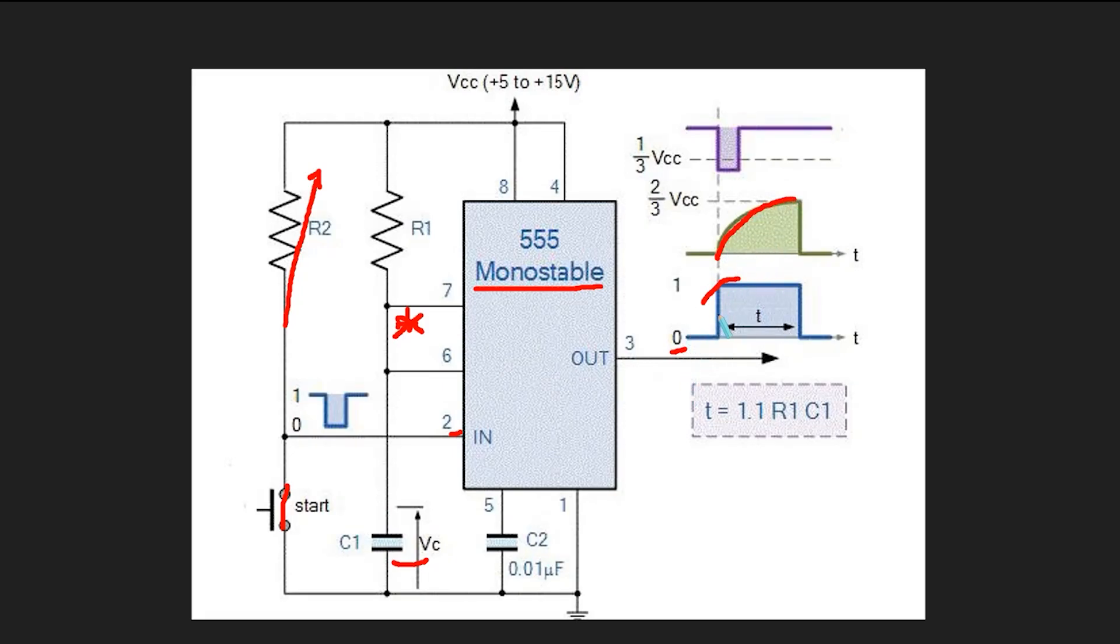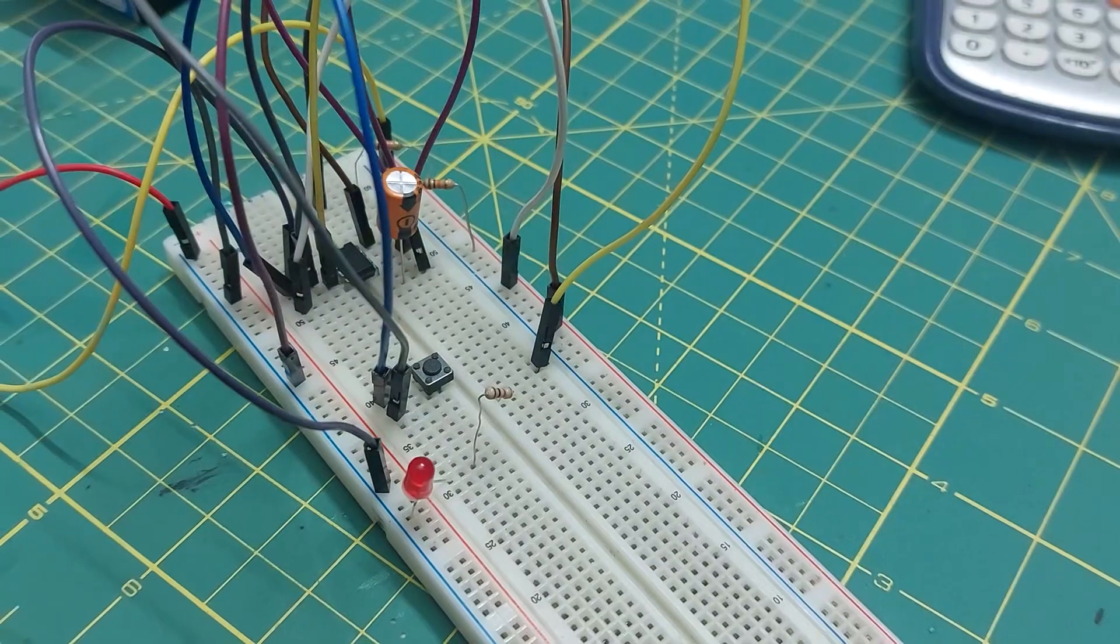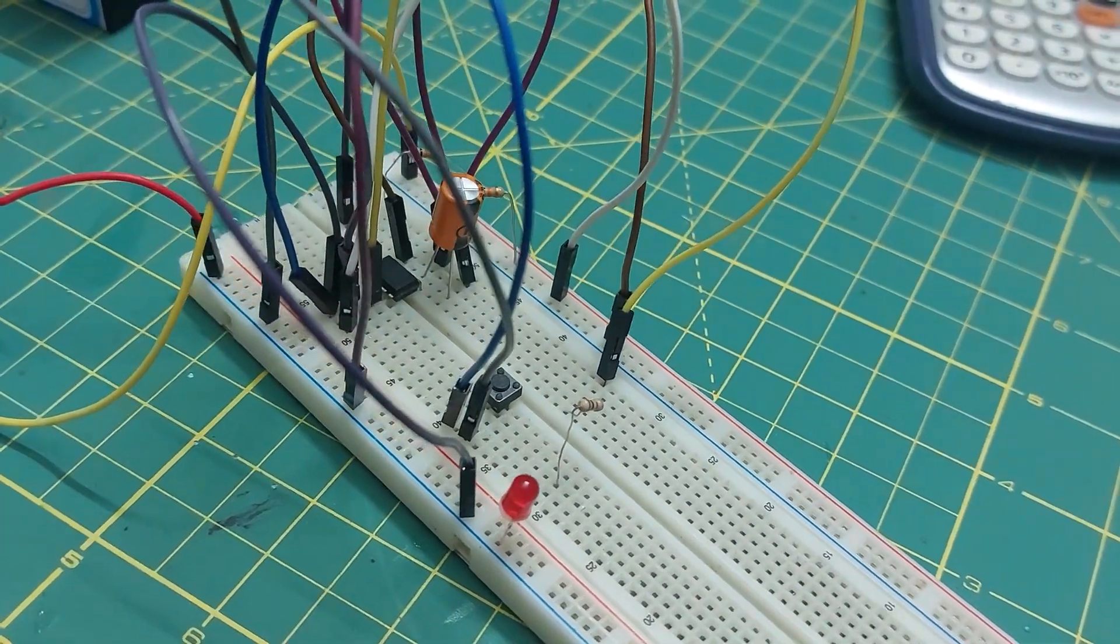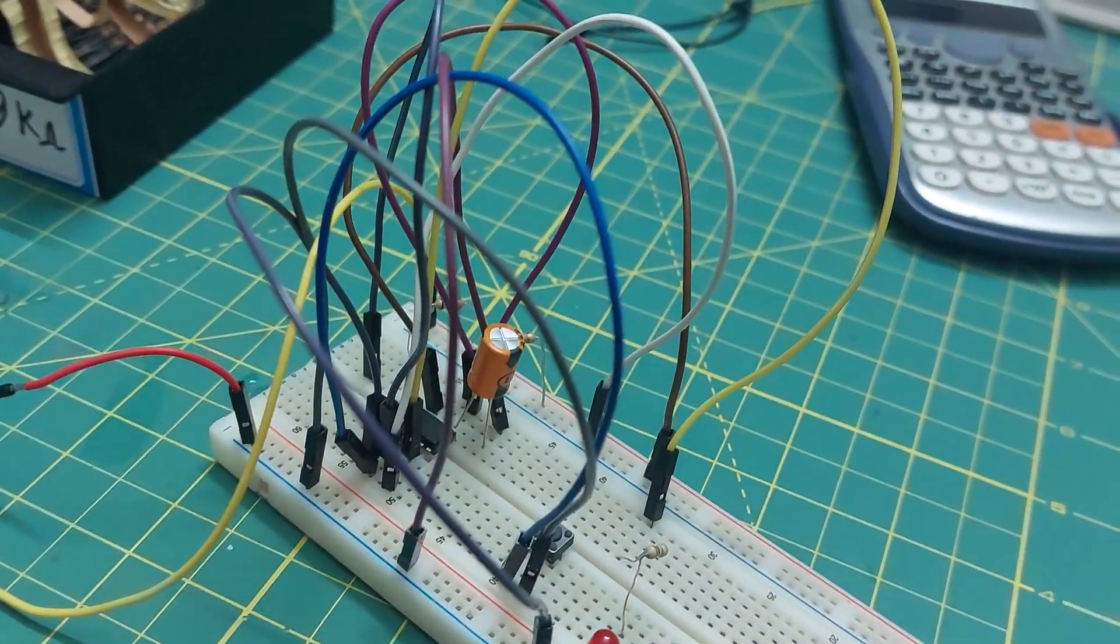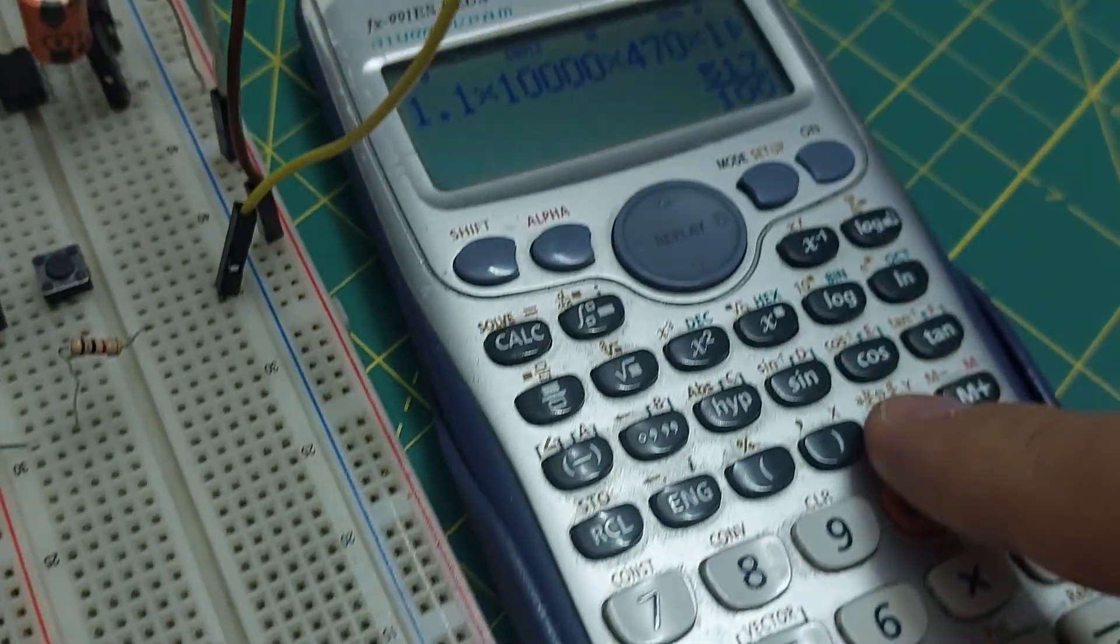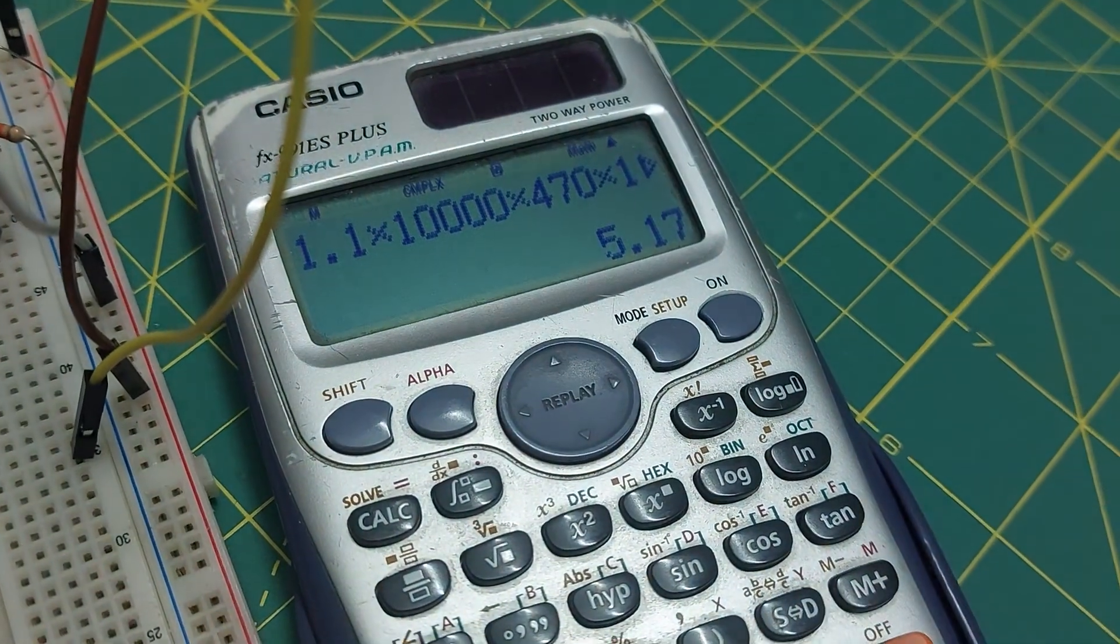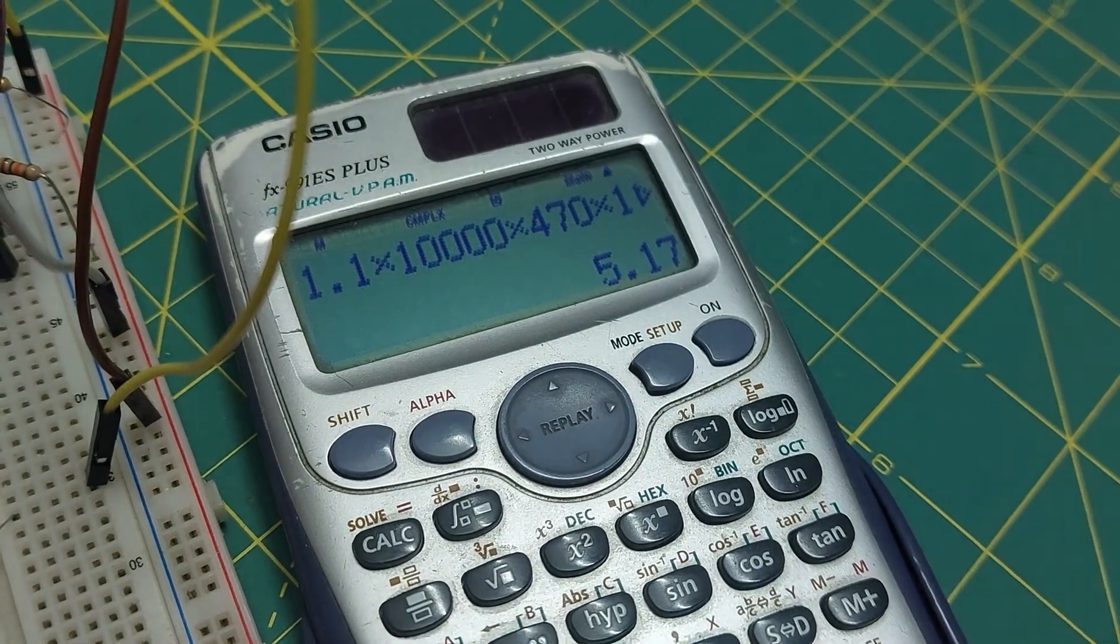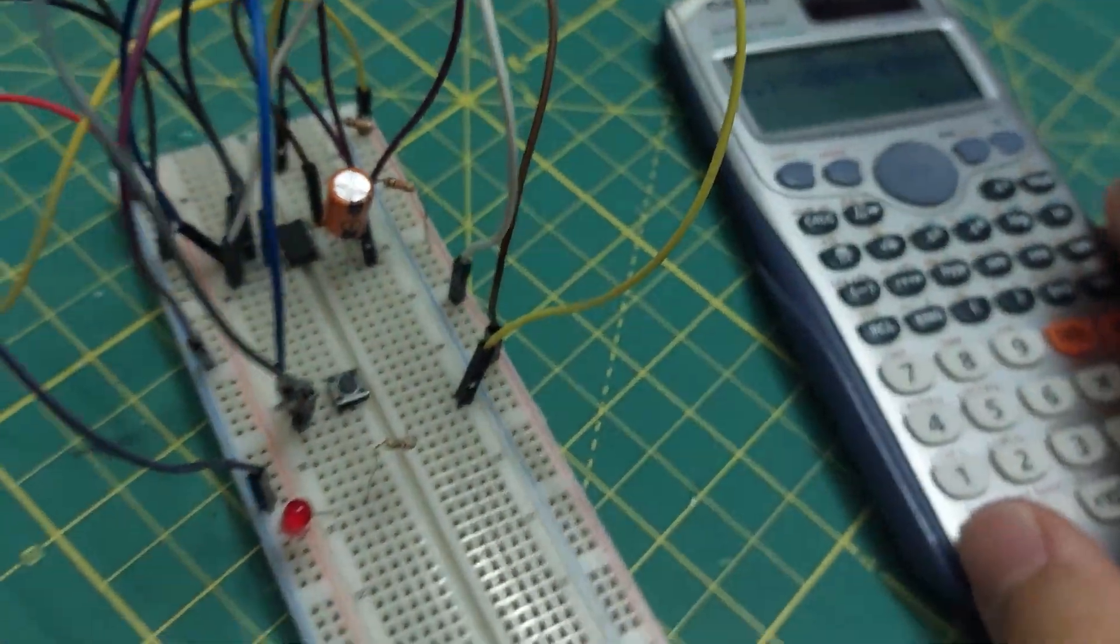So, this is basically how a timer works. I have prepared this circuit, although it has quite a bit of wiring. According to the formula, if you use a 10 kilo-ohm resistor and a 470 microfarad capacitor, the output will stay active for about 5 seconds.